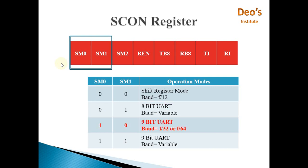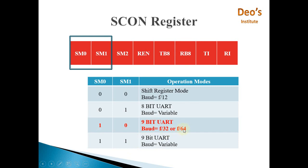Mode 2 is 9-bit UART. Here, 9-bit data plus 1 start bit and 1 stop bit are used. In this case, TB8 is used for transmission and RB8 is used for receiving. The 8-bit data comes from SBUFF and the 9th bit is the extra bit stored in TB8 or RB8 for transmission and receiving respectively. So with 9 data bits plus 1 stop bit and 1 start bit, 11 bits total are transferred. Baud rate is F/32 or F/64.